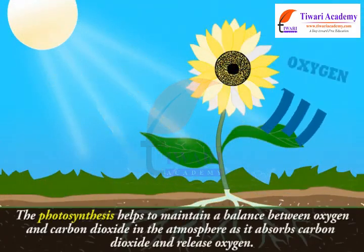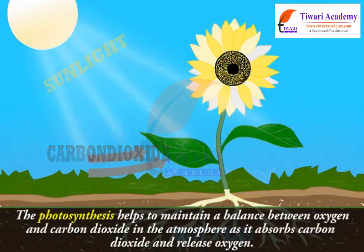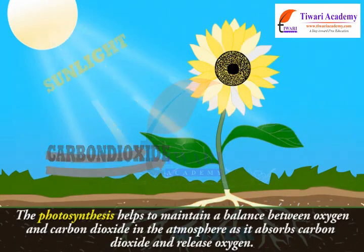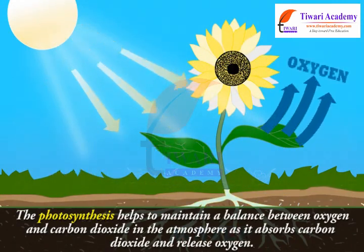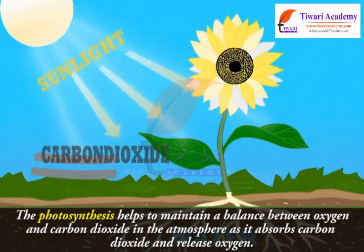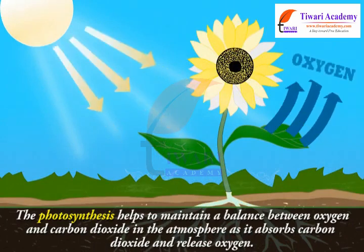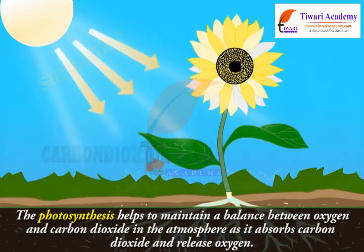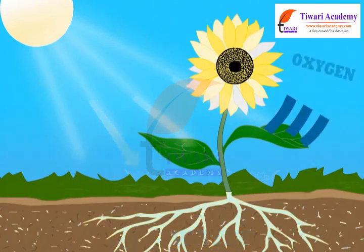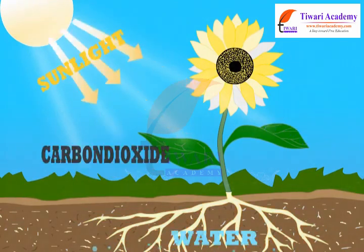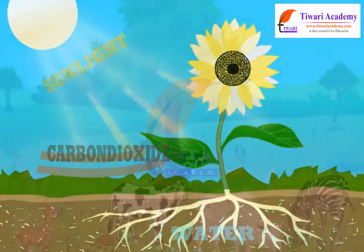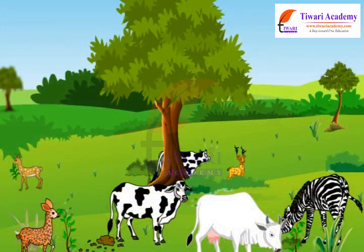Photosynthesis helps maintain a balance between oxygen and carbon dioxide in the atmosphere, as it absorbs carbon dioxide and releases oxygen. Sunlight is necessary for photosynthesis, making the sun the ultimate source of energy for all living organisms.